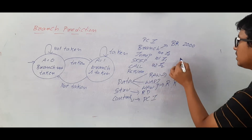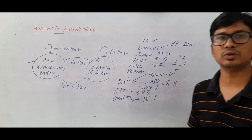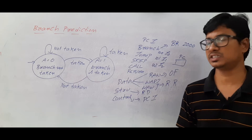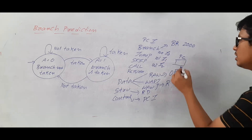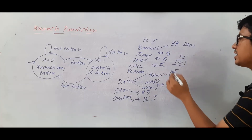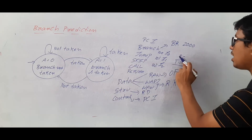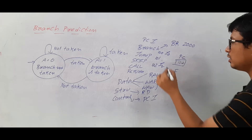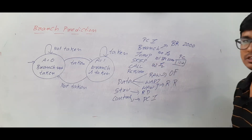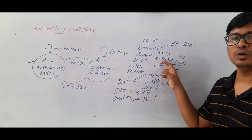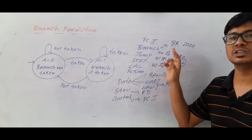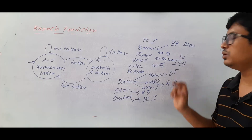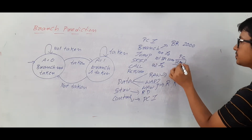The program counter (PC) is a special-purpose register that holds the address of the next instruction. When executing i0, the PC holds 101; when executing i1, it holds 102. If instruction i1 is an unconditional branch to location 2000, then the PC must be updated from 102 to 2000, and the processor must fetch the instruction at that location.